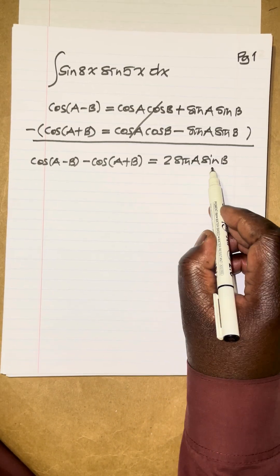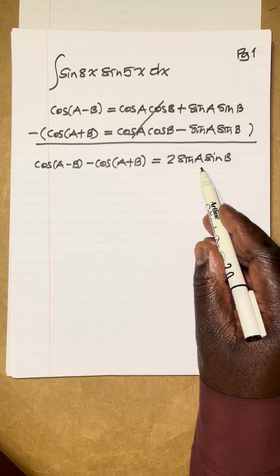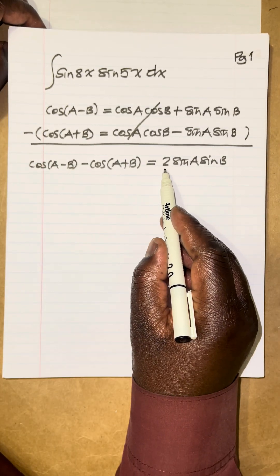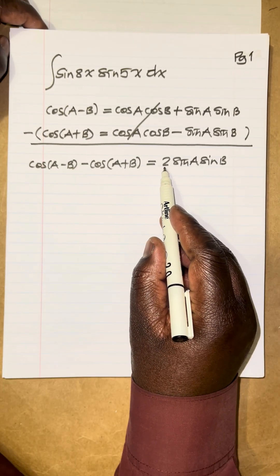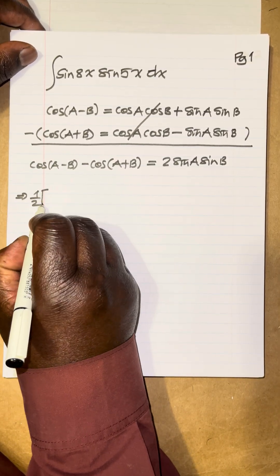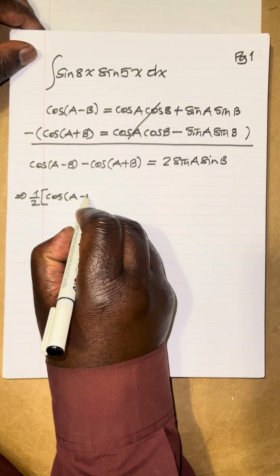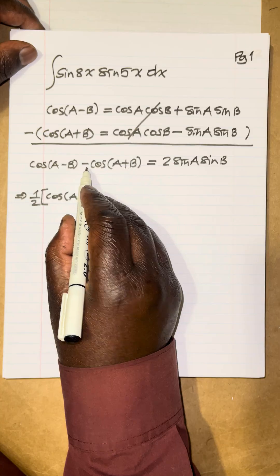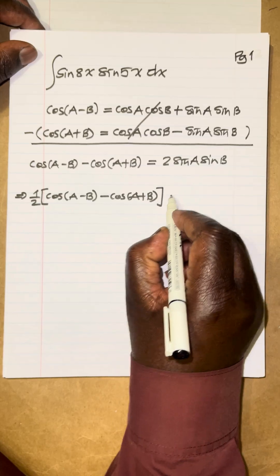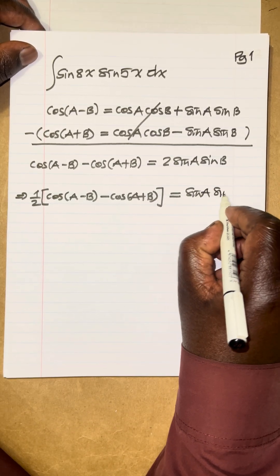Now looking at this expression, we'll let a equal 8x and b equal 5x. But we have a 2 on the right and we don't have a 2 in the integrand, so we divide both sides by 2. We get: sine a sine b equals one-half times cosine of a minus b minus cosine of a plus b.